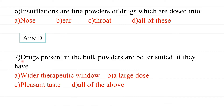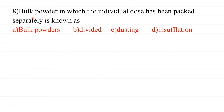Seventh question: Drugs present in bulk powders are better suited if they have a wider therapeutic window, a large dose, and a pleasant taste — all of the above. Bulk powders are suitable when the dose is large and the taste is acceptable. Eighth question: Bulk powders in which the individual dose has been packed separately is known as divided powder — that is the answer.